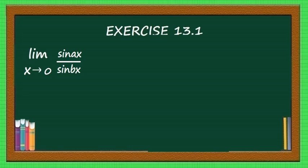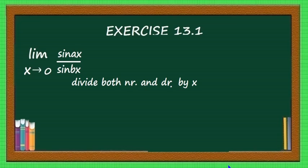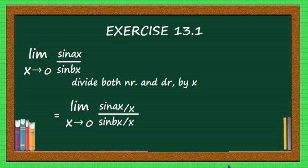See this problem: limit x tending to 0 of sin(ax) divided by sin(bx). If you put x equal to 0, sin 0 is 0 and the denominator is also 0, which is an indeterminate form. To solve this, the first step is to divide both numerator and denominator by x. We will have limit x tending to 0 of sin(ax)/x divided by sin(bx)/x.